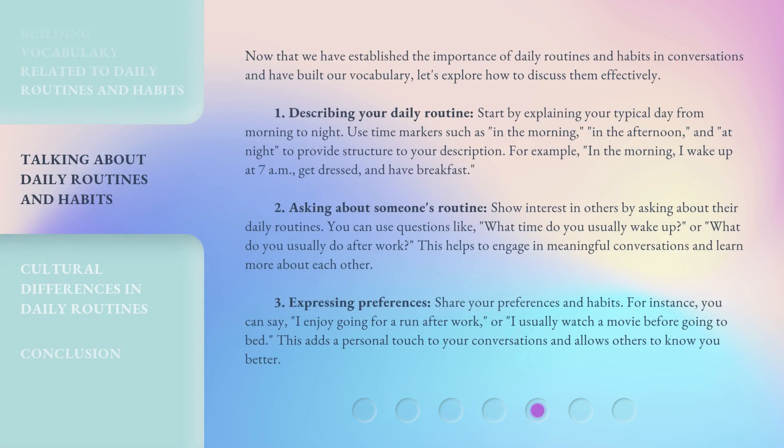Now that we have established the importance of daily routines and habits in conversations and have built our vocabulary, let's explore how to discuss them effectively. First, describing your daily routine: start by explaining your typical day from morning to night. Use time markers such as 'in the morning,' 'in the afternoon,' and 'at night' to provide structure to your description. For example, in the morning I wake up at 7 a.m., get dressed, and have breakfast.